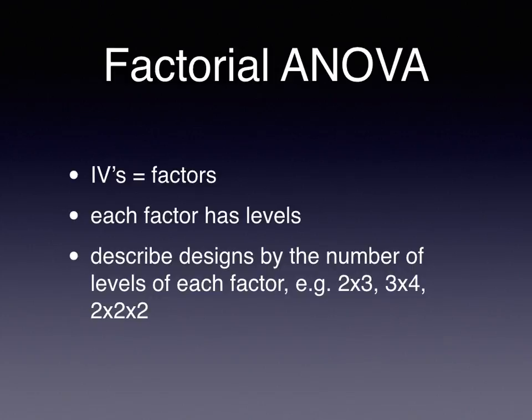In factorial designs, we describe the design by the number of levels of each factor in this manner. You'd refer to a two-by-three design where you have two factors — two independent variables — one with two levels and one with three levels. You could have a three-by-four design: one independent variable with three different groups, and at the same time you're manipulating a second independent variable with four different groups. We'll talk about a simple example in just a moment.